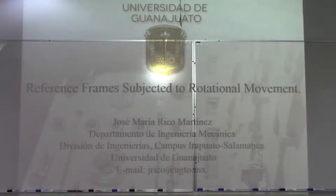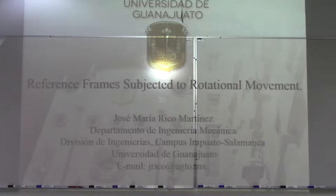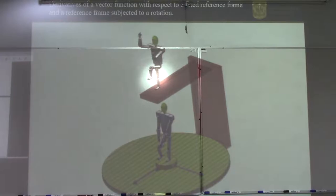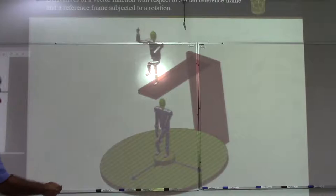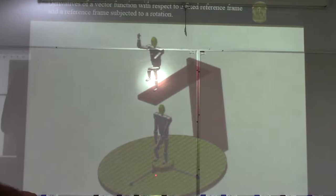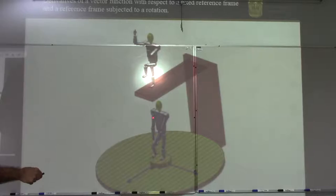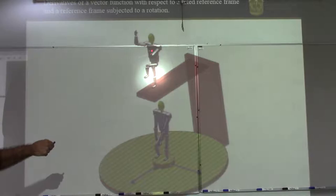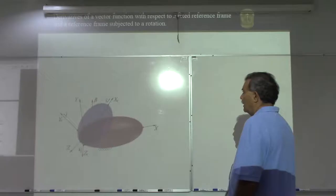In the second part of this topic, we are going to consider how to compute the time derivatives of a vector function with respect to different reference frames: one fixed to the earth and one subjected to rotations around a fixed point. As previously indicated, we are going to consider as an example the movement of a rat that escapes from the carousel along a straight line represented by a vector, and we are going to consider how the velocity and acceleration of this rat is related as seen from the moving reference frame represented by a person rotating with the carousel, and also with a fixed reference frame represented by a person fixed to the earth.